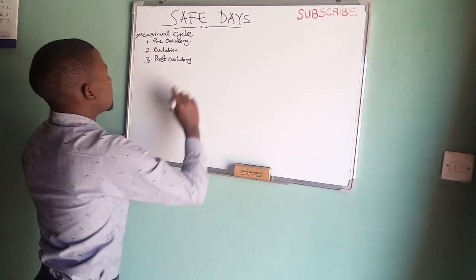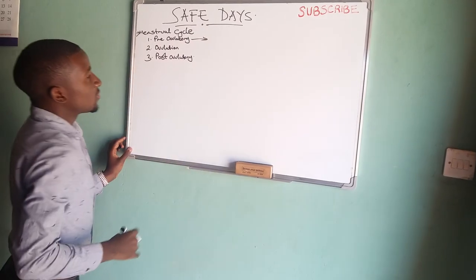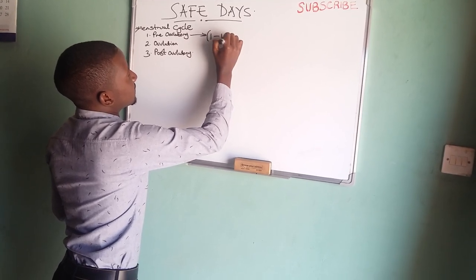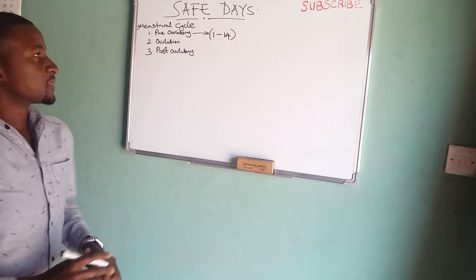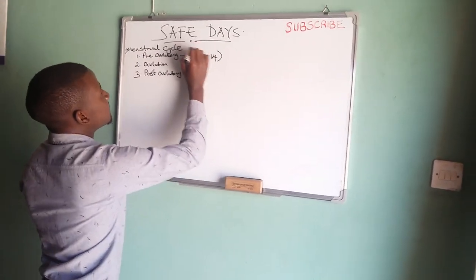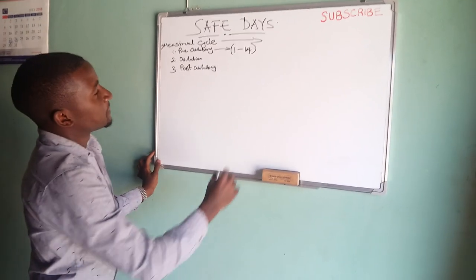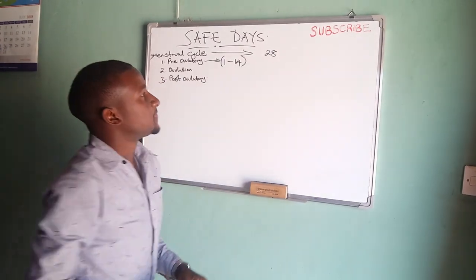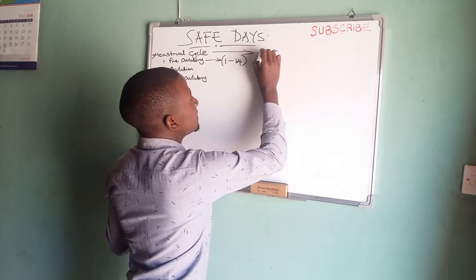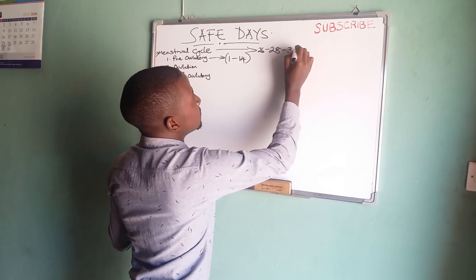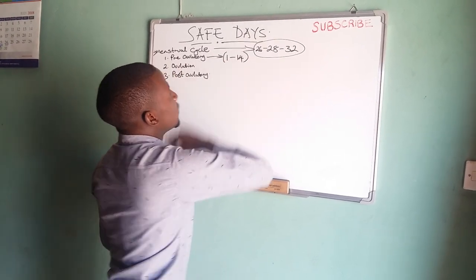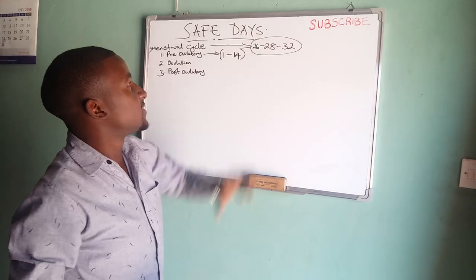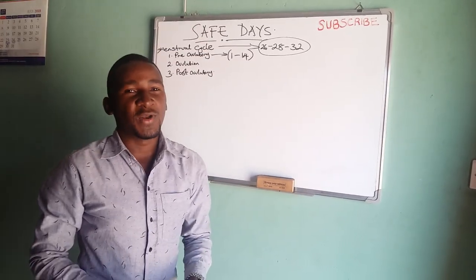This menstrual cycle is made up of, on average, 28 days — that is about one month. And this can range from 26 to 32 days. This is the range we are using for our safe days calculation. If your cycle doesn't fall between 26 to 32 days, this method won't help, and you will have to use another method.